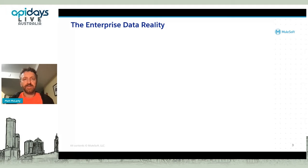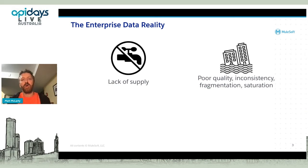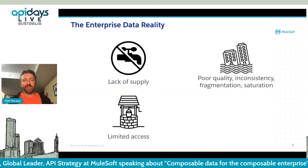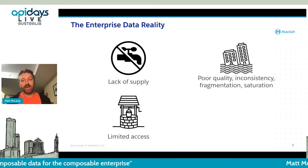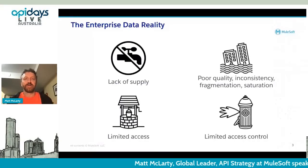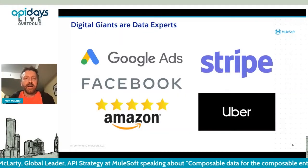As we get all this gobs of data we run into yin-and-yang issues. On one hand there's a lack of supply — maybe we don't have all the data we need. On the other hand, maybe we have so much that it's hard to get quality, consistent data or even find the data we have. And similarly, on one hand it's hard to access data hidden in legacy systems, while on the other hand it's hard to control access to the data once you have it.